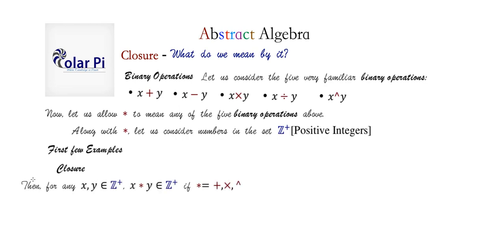That is, for any x, y in the positive integers, x star y is going to remain in the positive integers if star is addition, multiplication, or exponentiation. These are pretty self-evident things, so I'll just write them down, but they don't need elaboration.